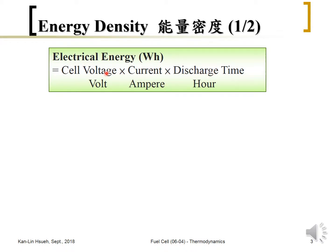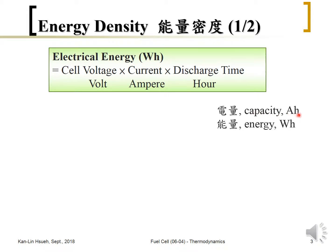The cell voltage is in volts, the current is in amperes, and the discharge time is in hours. Volts times amperes gives watts. There are two quantities we are looking at: capacity and energy. Capacity means how much charge flows through, with the unit amp-hour, and energy has the unit watt-hour.